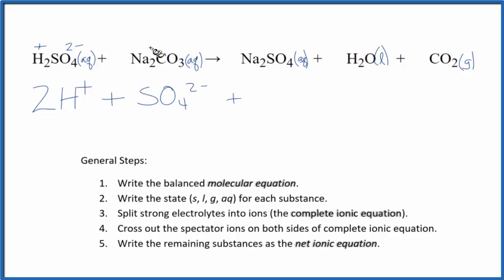Sodium is also in group one, so it forms one plus ions. Carbonate has a two minus ionic charge. We have two sodium ions and one carbonate ion.